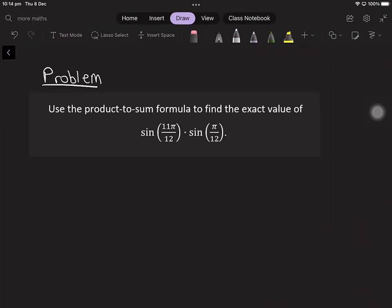In this video we'll be having a look at the following trigonometry problem. Use the product to sum formula to find the exact value of sin 11π over 12 times sin π over 12.